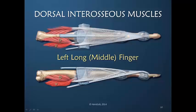The same would be true on this side — the dorsal belly would influence the dorsal apparatus. This becomes fairly easy to remember. The dorsal belly of the dorsal interosseous inserts into the dorsal apparatus. If you can remember the three D's — dorsal, dorsal, dorsal — you can remember that the dorsal interosseous, which has a dorsal belly, inserts into the dorsal apparatus.